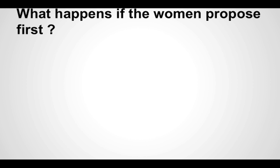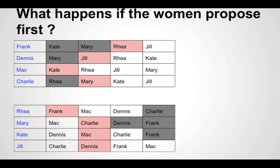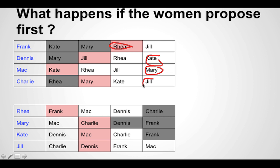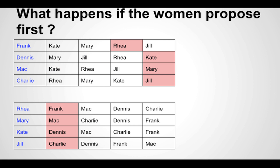We said we would discuss the implications of the women proposing first. In the previous example the men proposed first and we found a stable matching. Now if the women propose first: Rhea proposes to Frank, Mary proposes to Mac, Kate proposes to Dennis, and Jill proposes to Charlie — and in one round we find a stable matching. This matching is much more favorable for the women than for the men. This is generally true: the stable matching tends to favor the group that does the proposing.